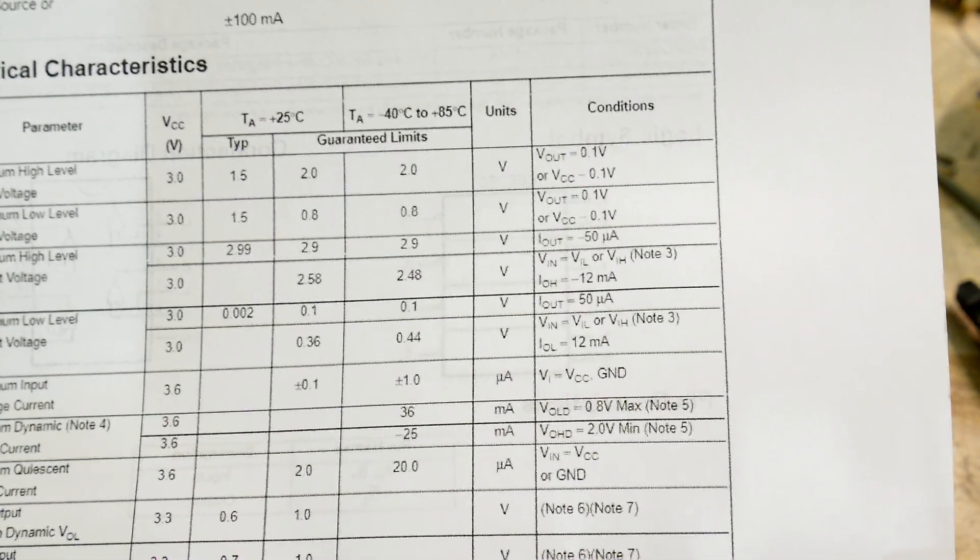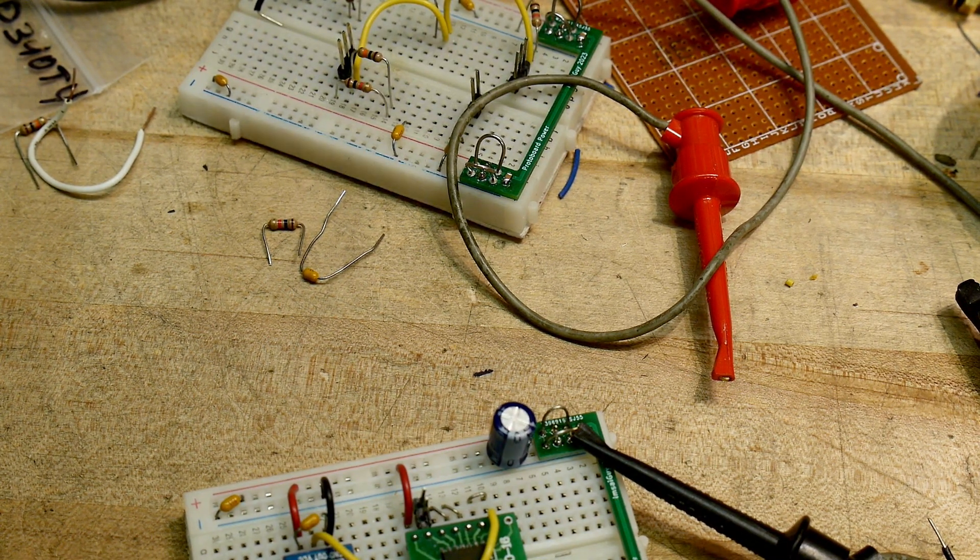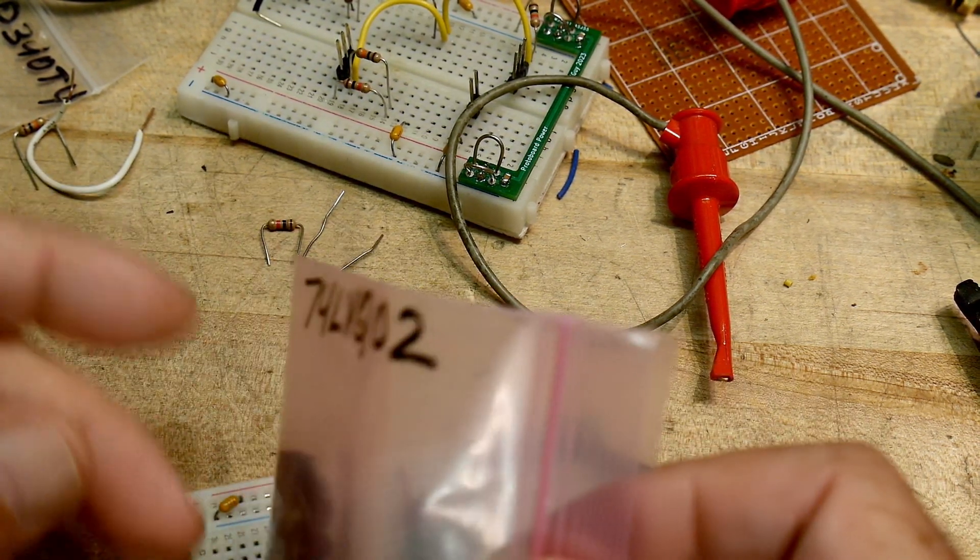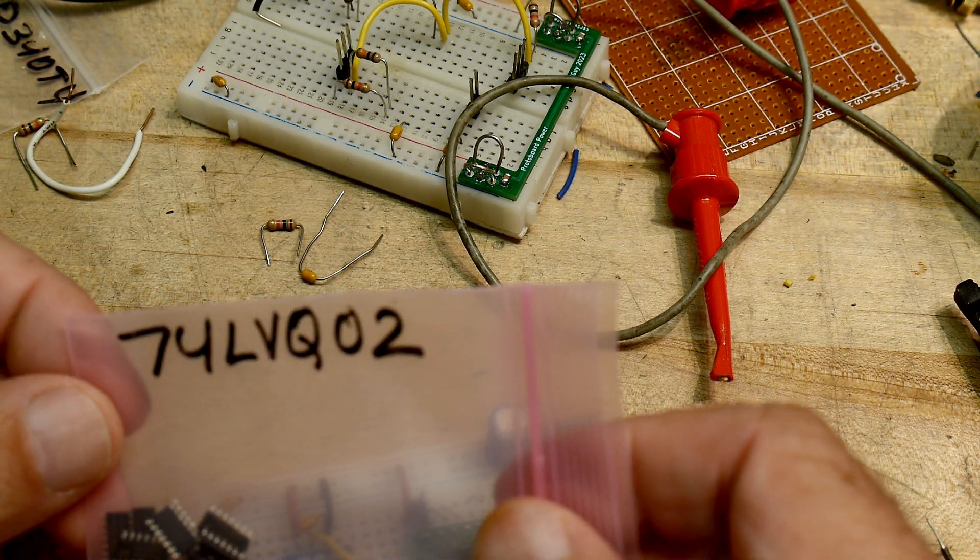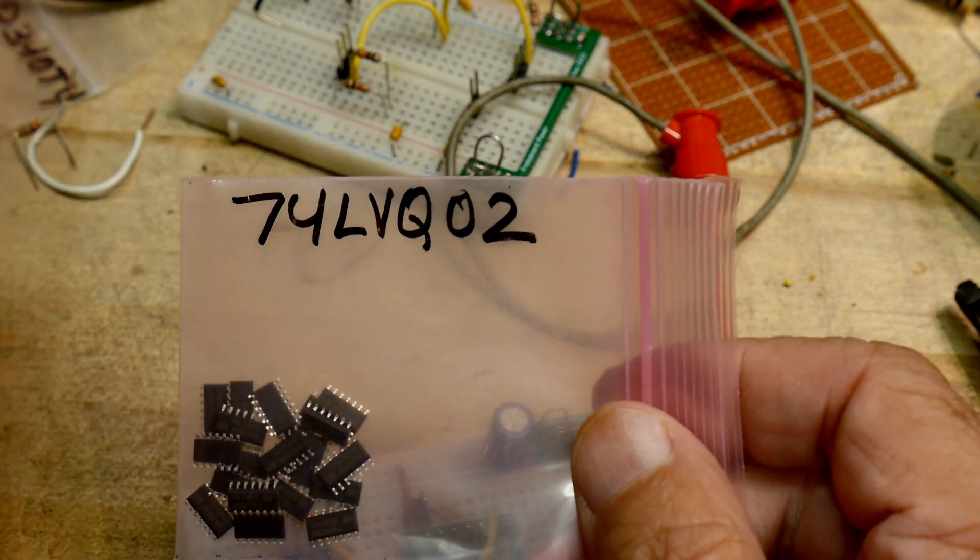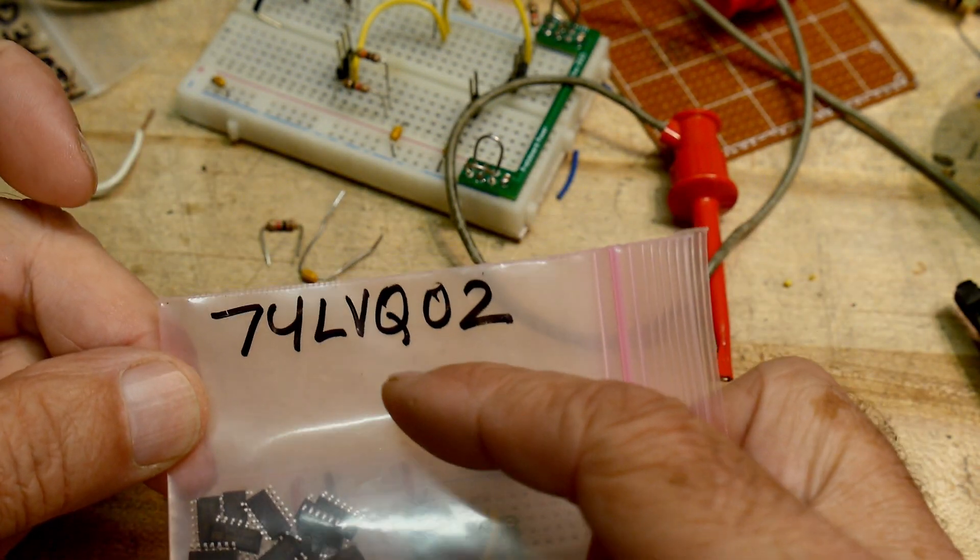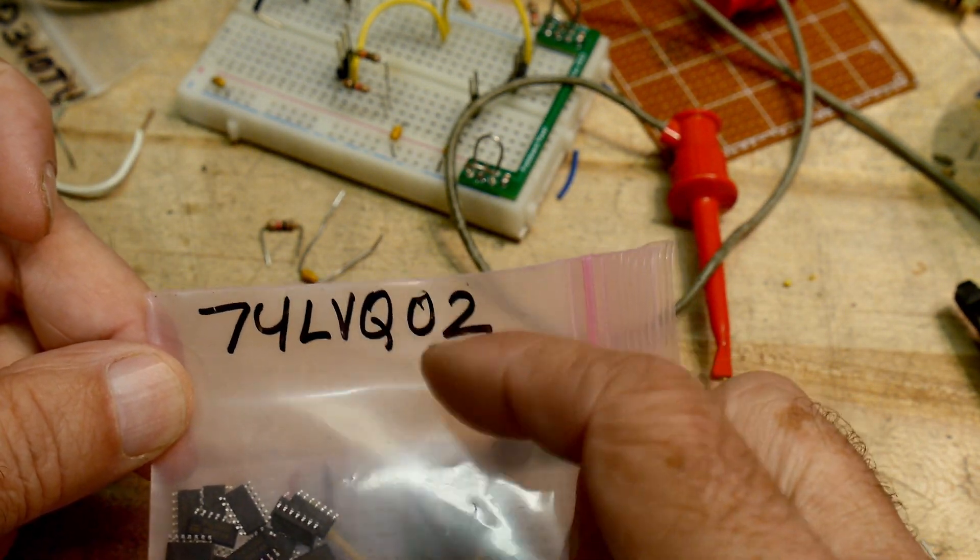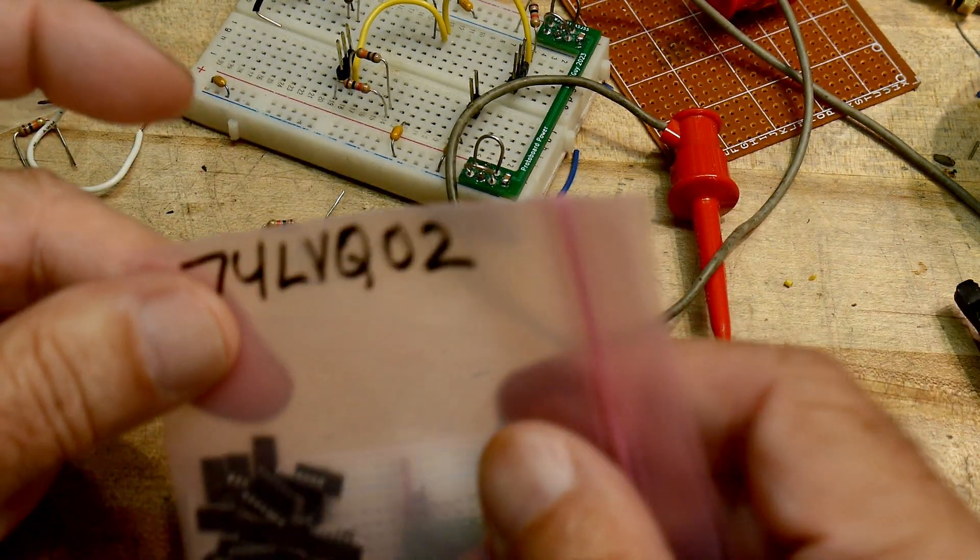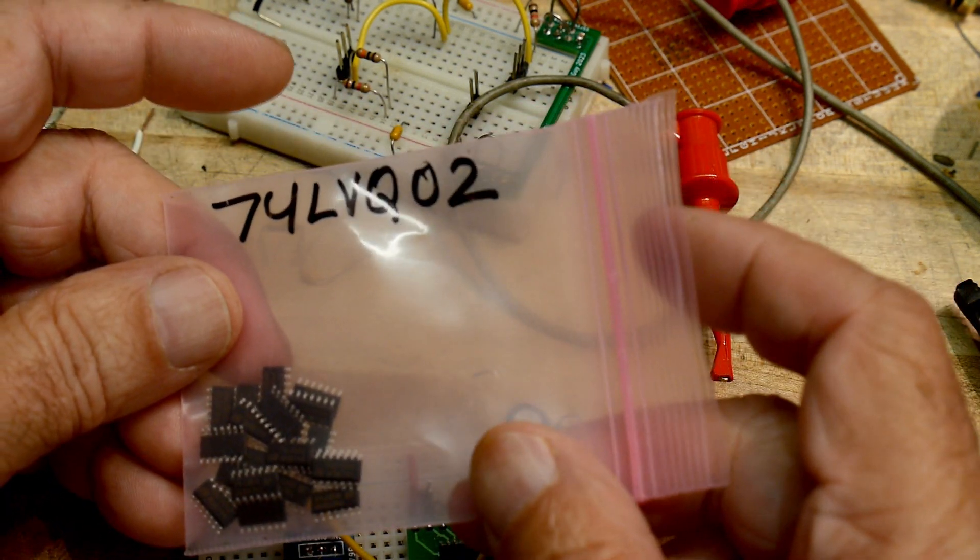Let's hook one up. The reason I have these is I was at Anchor Electronics and sometimes they have grab bags, and I got a grab bag for a buck. So these are all different types, so I bought several things that were a buck. This is a 74LVQ02, got a bunch of them. They're surface mount packages, 14S, so I had to use a little adapter card which I have.